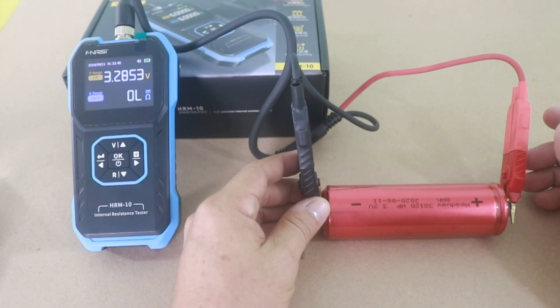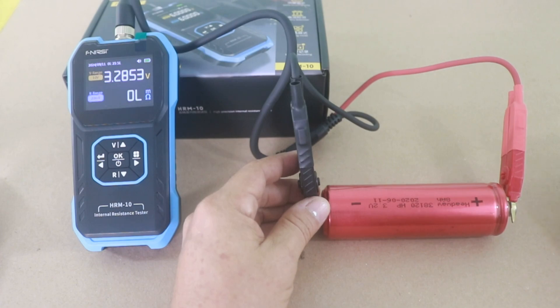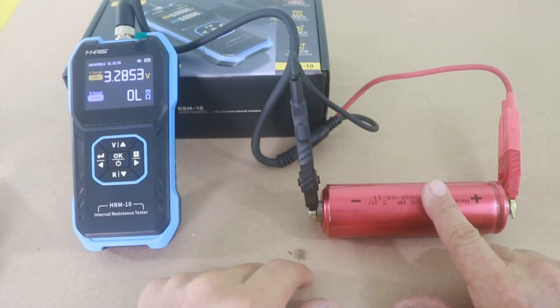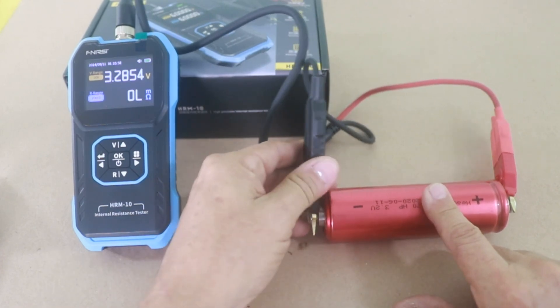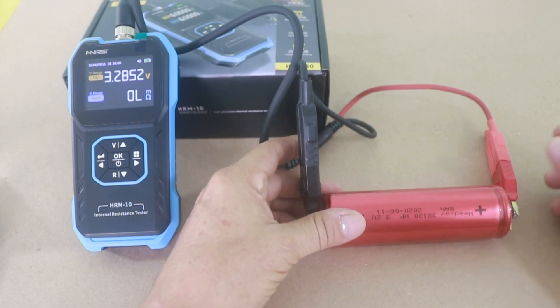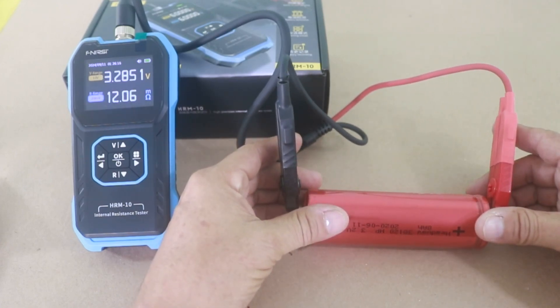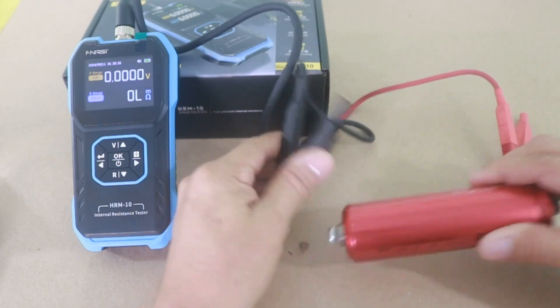Voltage is 3.2 volts, which is correct. This type of chemistry will give you 3.25 volts when fully charged. And I can see the resistance measurements. It is not measuring. Oh, that's strange. Let me put it again. Oh, there it is. It is around 10 milliohms. Yeah, 10 milliohms for this battery.